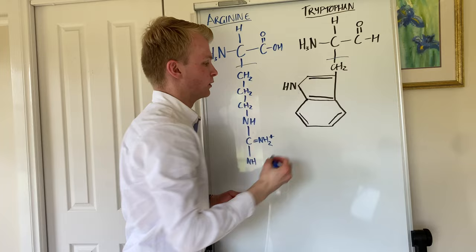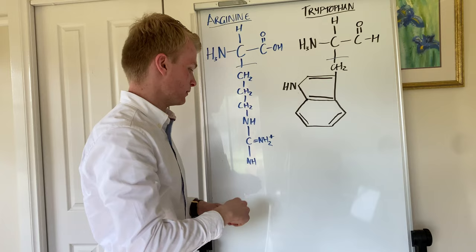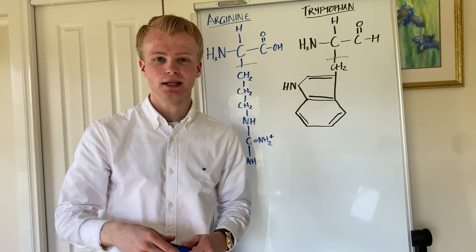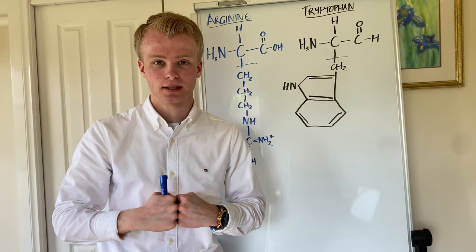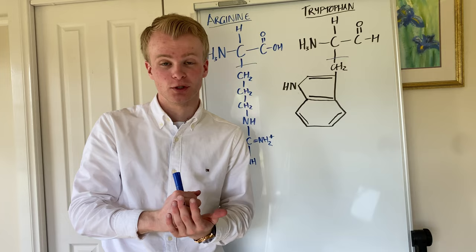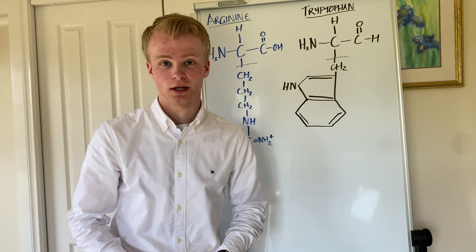Arginine has a positively charged side chain, as you can see by this positively charged residue here. That means it is attracted to negatively charged amino acids in other parts of the chain. Think about the way that a magnet sticks to a fridge — that is the kind of interaction this positive charge will have with a negative charge in a different part of the chain.